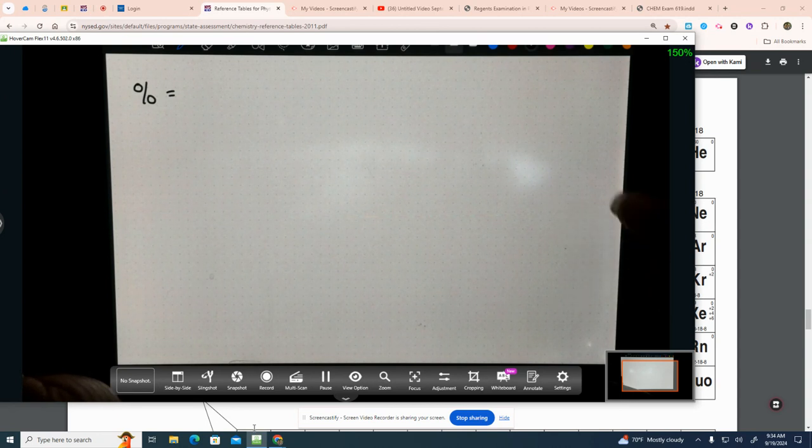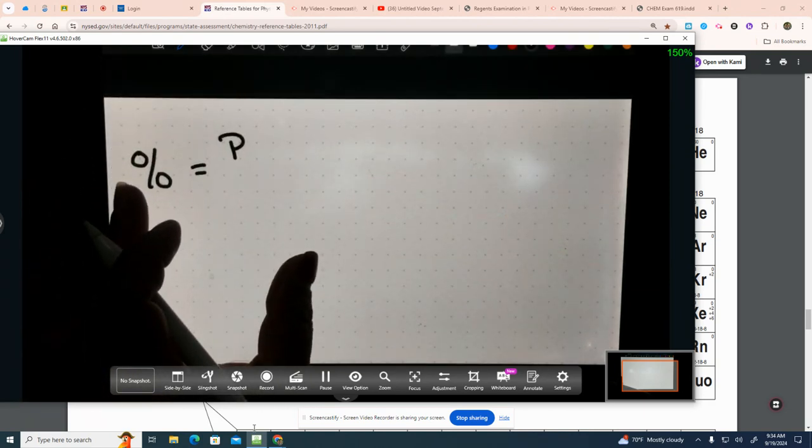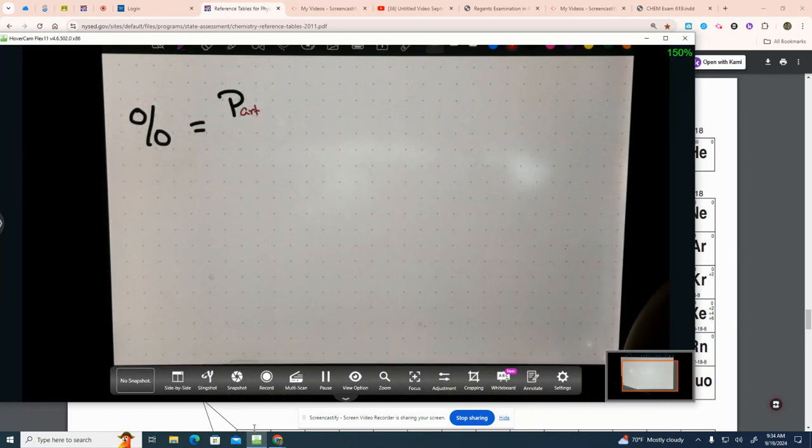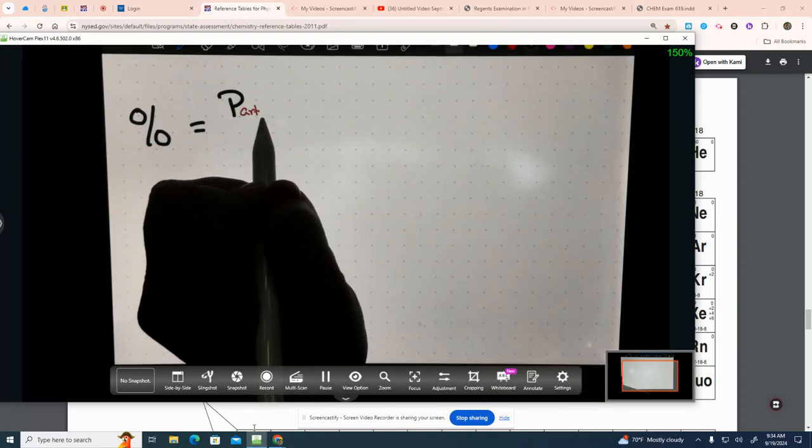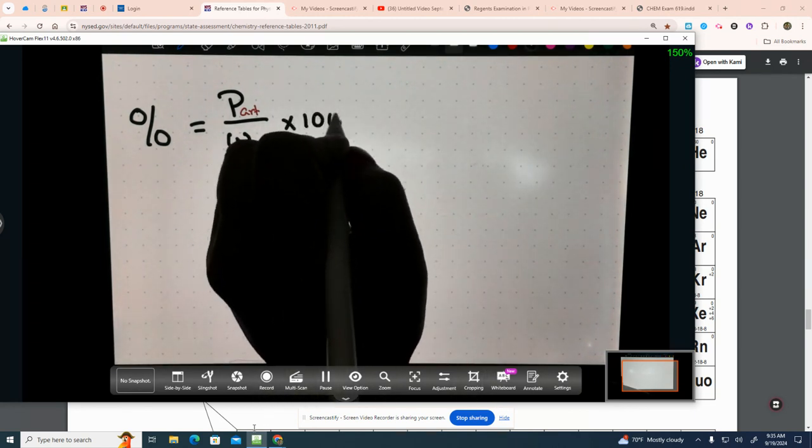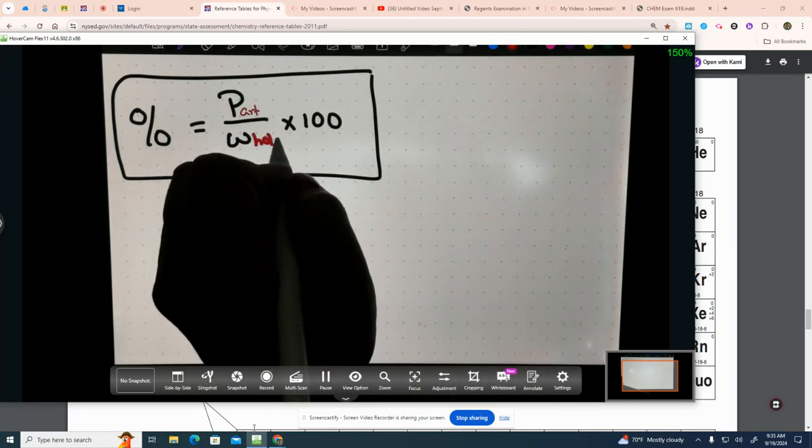This formula for percent is very important because we use it all year long. So, this formula I want you to write down. Abby, go ahead. Tell us what you think it is. That's percent error. I want percent. All right. It's close to percent error, but it's just percent. So, we're going to do the part that we want the percent of. So, I'm going to abbreviate that with a P. And then I'll write down art down here. That's the part. Divided by the whole amount. Part times 100. So, this is part divided by whole times 100.